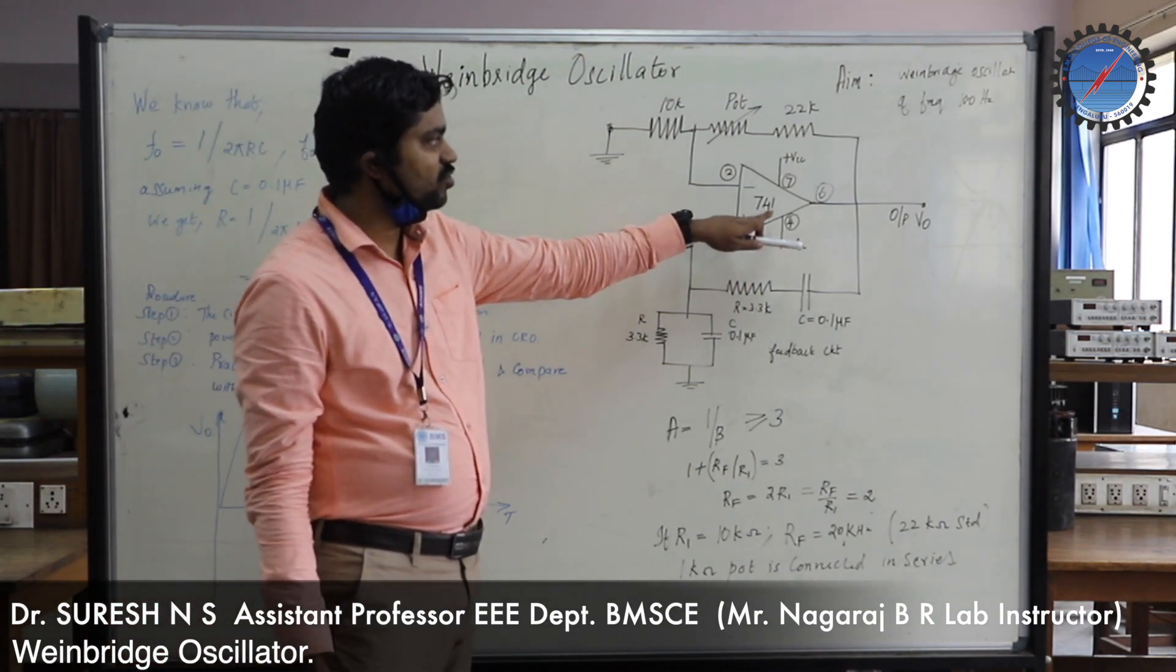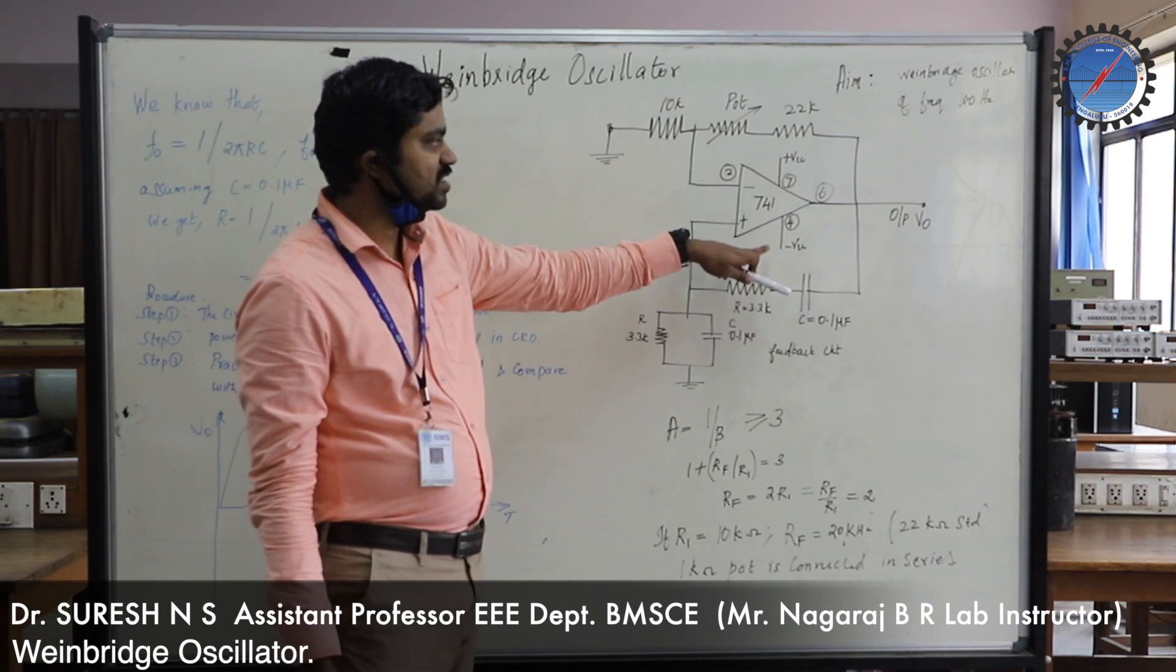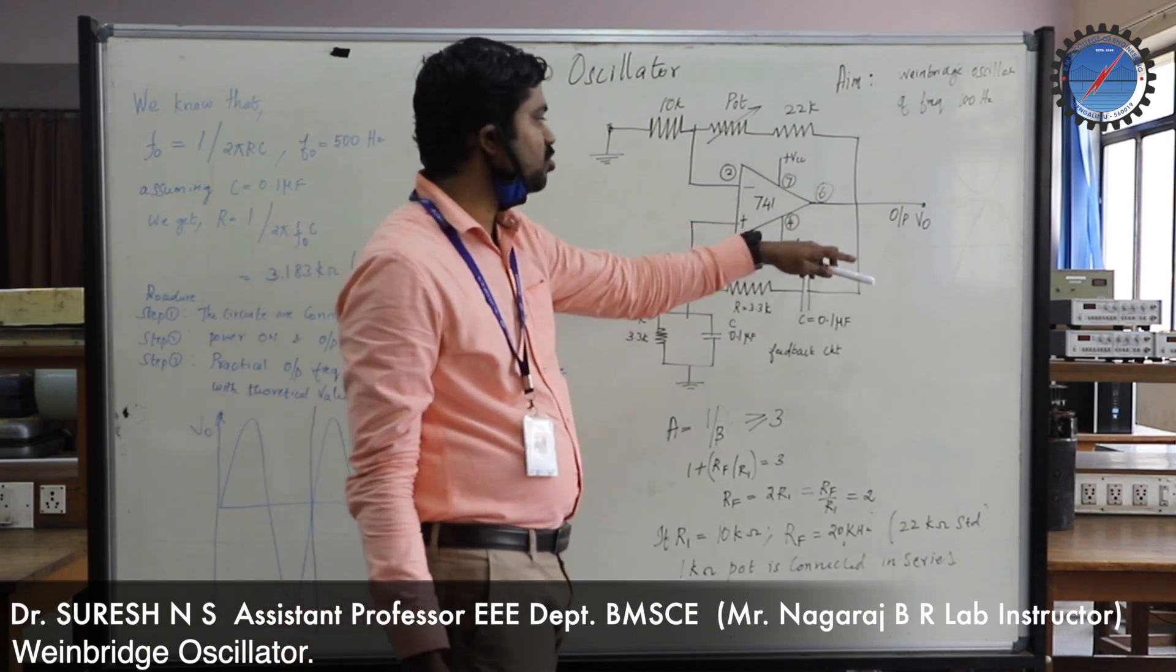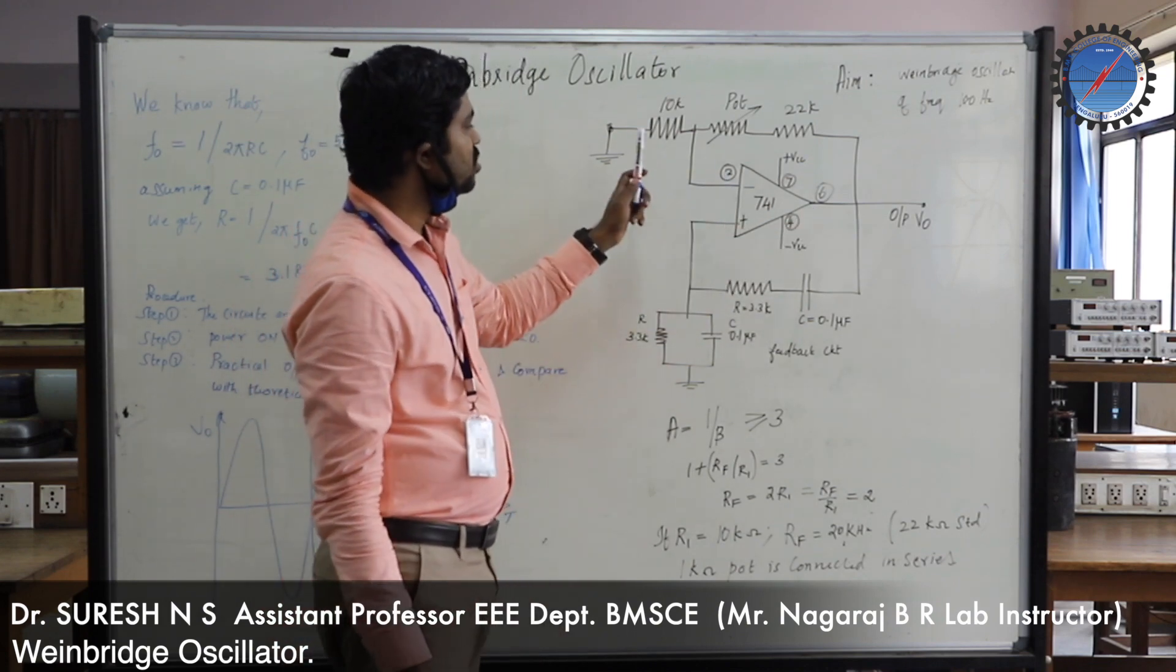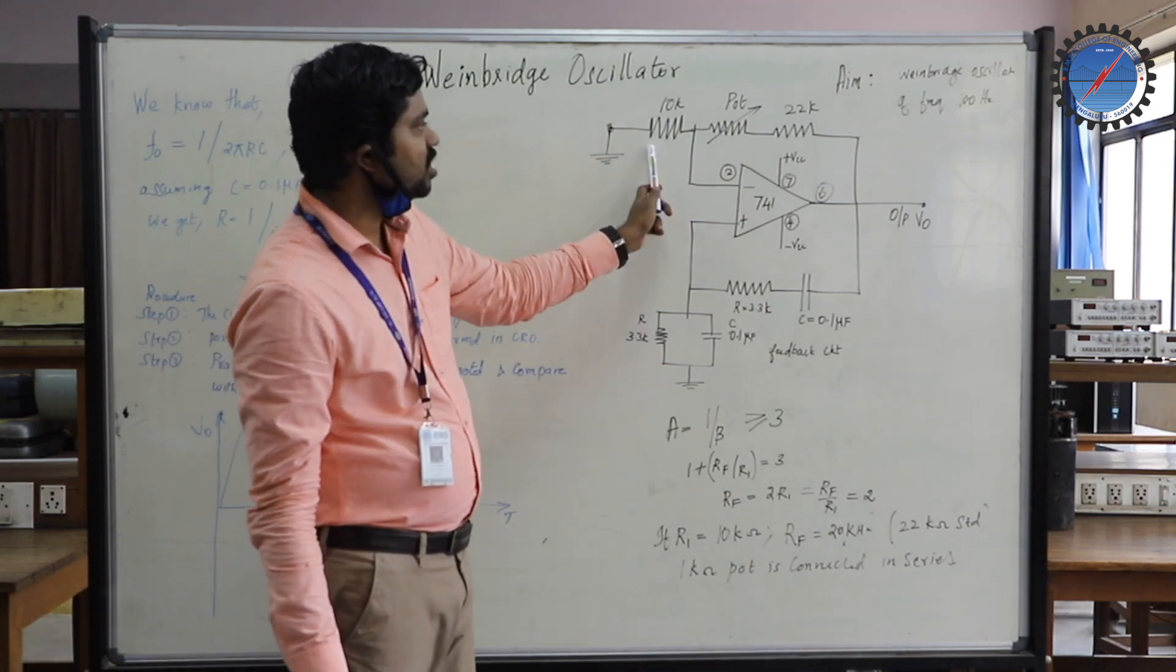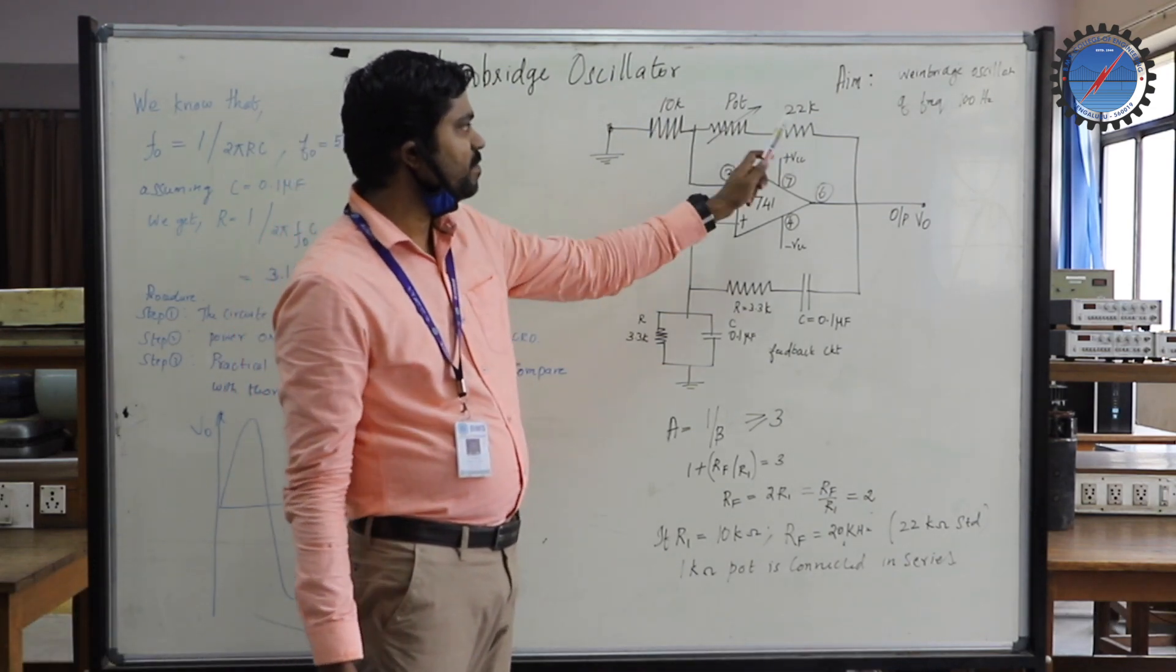As the name suggests, pin 7 and pin 4 are the supply connections: VCC plus and VCC minus. Pin 6 is the output, and pin 2 connects to R1 and R2, 10K and 42K.